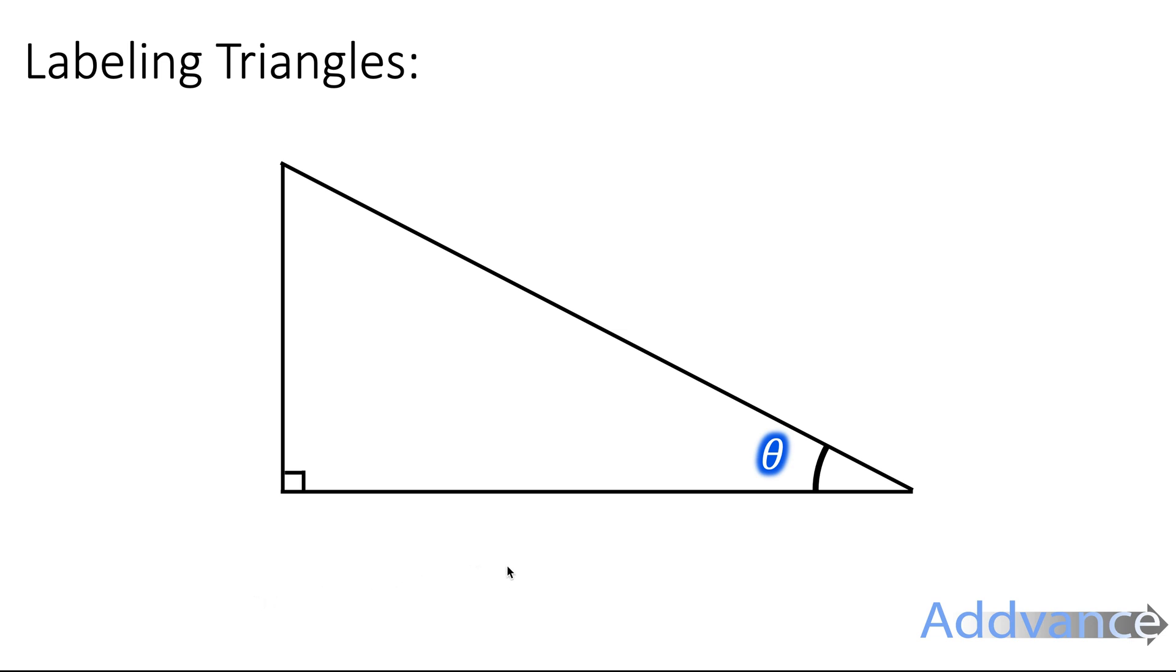We then label the sides. So we have the angle here, opposite the angle is called the opposite side. Next to the right angle and the angle is called the adjacent side, and then the slanty angle, which is always opposite the right angle, is called the hypotenuse. The opp, the adjacent, the hyp.